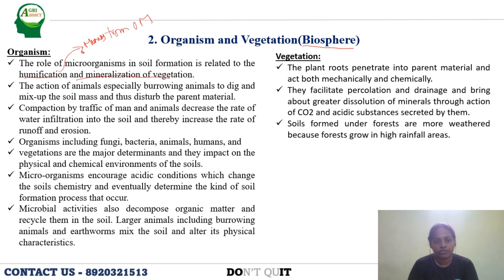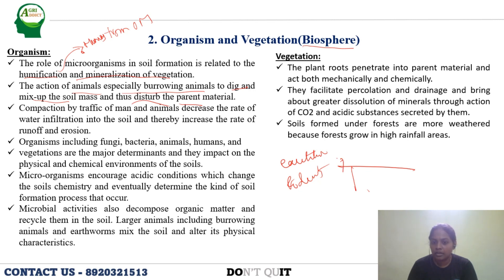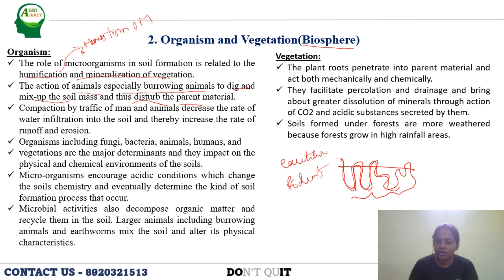The action of animals, especially burrowing animals, is to dig and mix up the soil mass. Burrowing animals like termites, earthworms, and rodents make galleries or zigzag pathways in the soil while searching for food. This disturbs the parent material and causes mixing of soil horizons — upper to lower. Compaction by traffic from humans and animals decreases the rate of water infiltration, thereby increasing the rate of erosion and runoff. Heavy loads on soil form a hard layer that blocks pores, so water flows off as runoff rather than infiltrating.